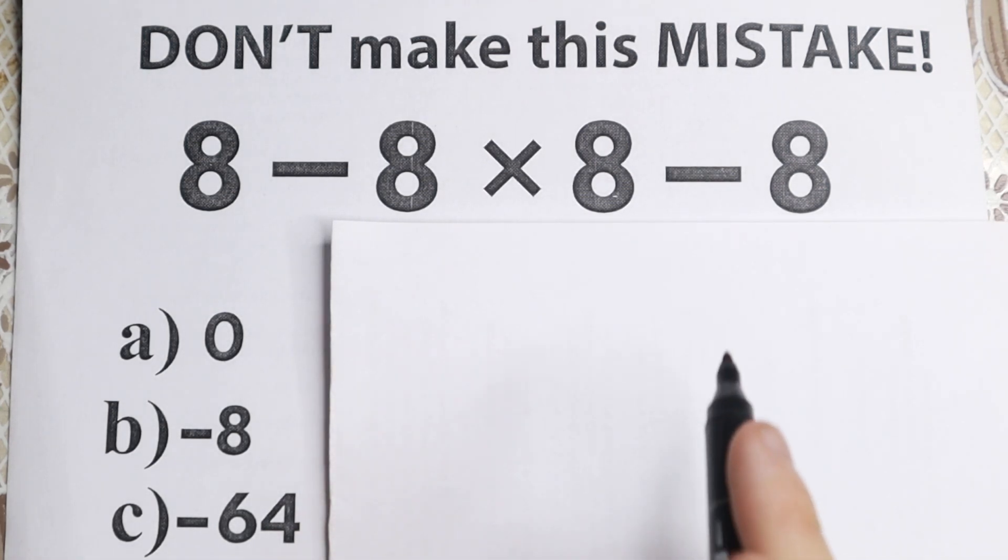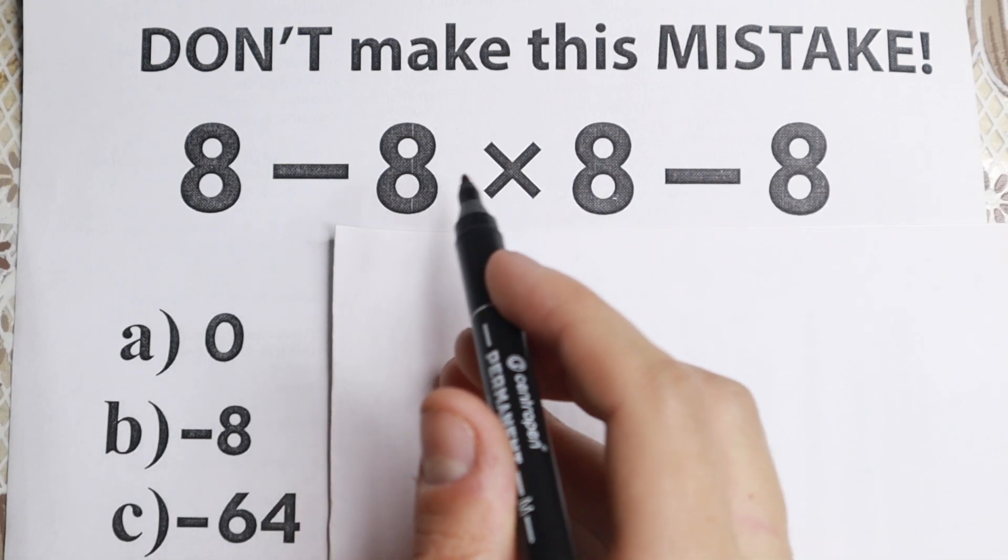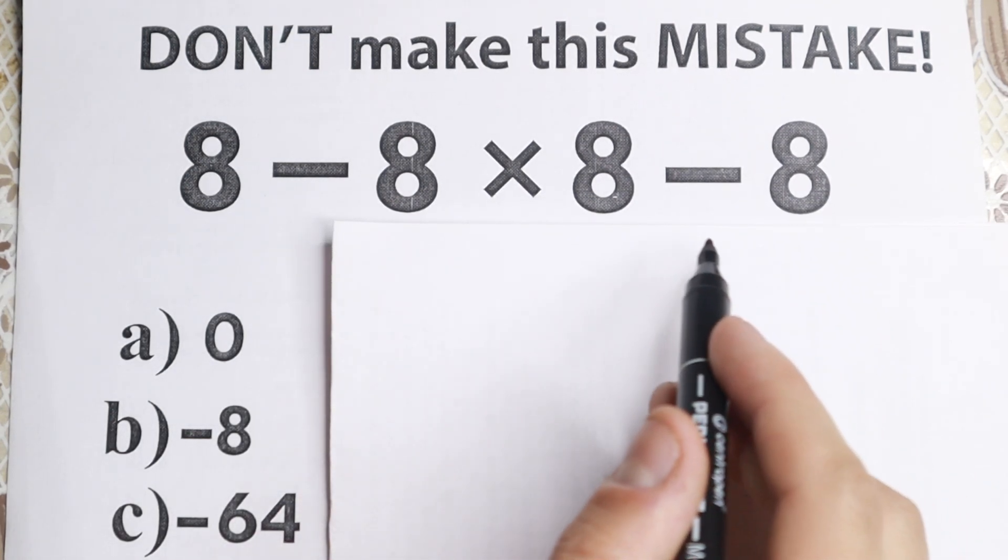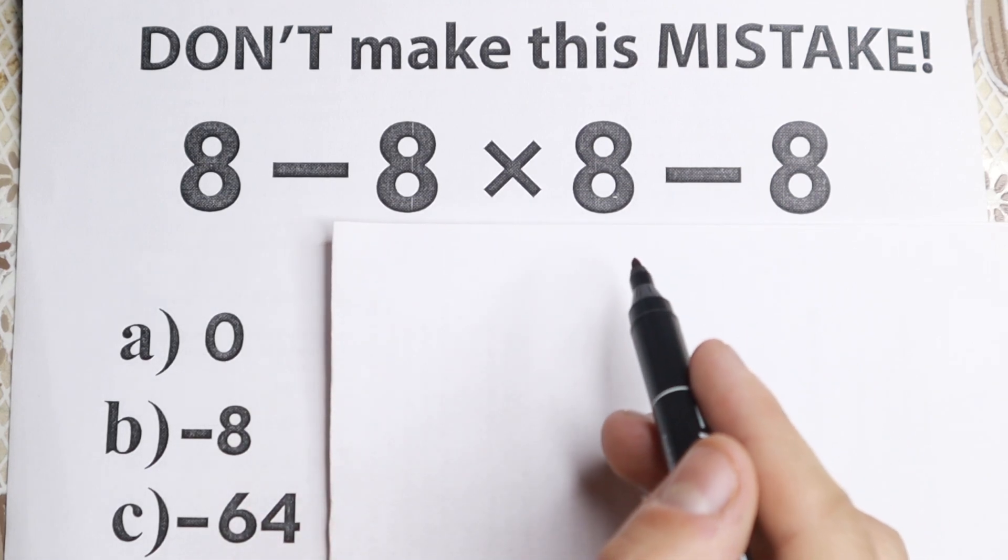So here is the problem and I want you to use your calculator. We have 8 minus 8 times 8 minus 8. As you can see no huge numbers, we have only subtraction and multiplication.